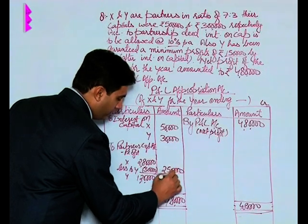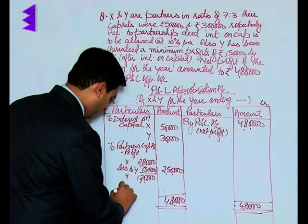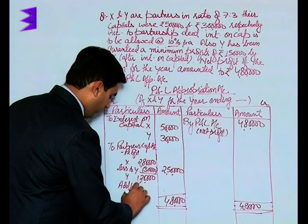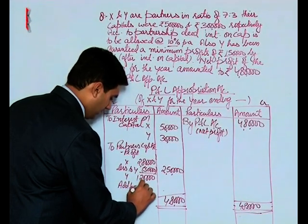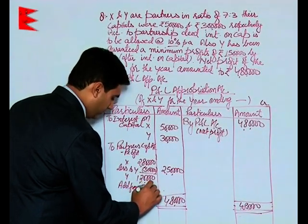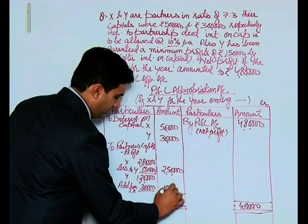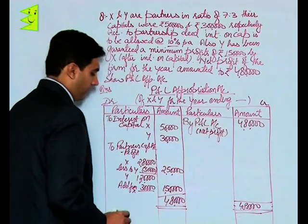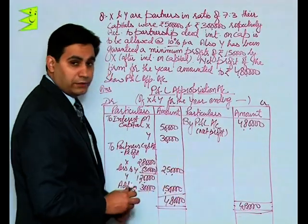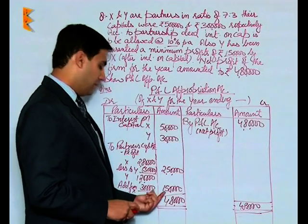That is less to Y, 30,000. The amount that would be actually given to X would be 2 lakh 50,000, then add from X 30,000 and this amount would be 1 lakh 50,000. So the total comes to 4 lakh and the guaranteed amount to Y has been fulfilled, 1 lakh 50,000.